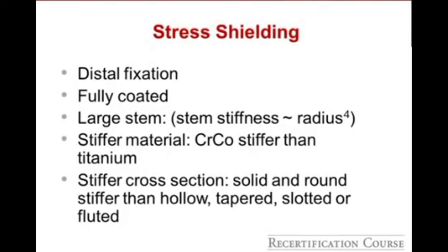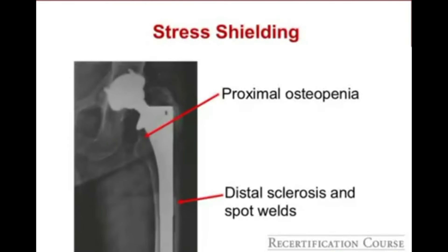Stress shielding involves a stem that is distally fixed — often seen in cylindrical, fully porous-coated stems. Larger, stiffer stems cause more stress shielding. Cobalt chromium is the typical culprit. On X-ray, you'll see distal sclerosis and spot welds where the stem is well ingrown — the point of stress transfer. Proximally, the bone is unloaded, producing osteopenia in this area. Remember this image as we discuss osteolysis later, as the appearance is different from osteolysis.